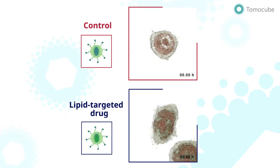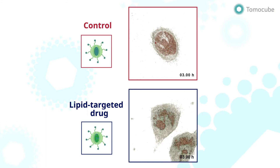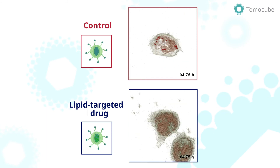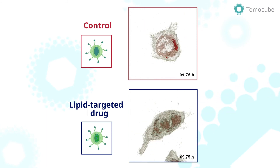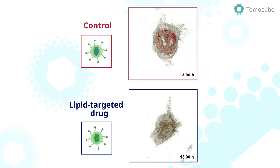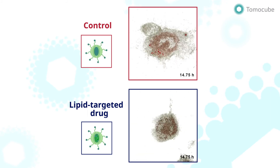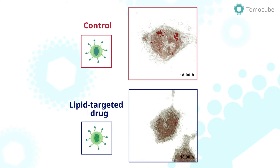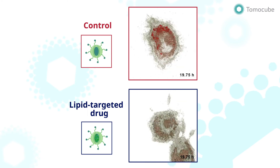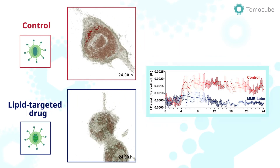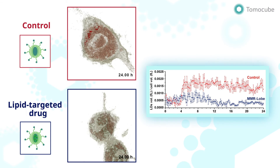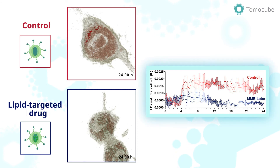Finally, the team identified changes to the macrophages after treatment with macrophage-specific lipid targeting drugs. The foam cell formation process after drug treatment was recorded for 24 hours by HT time-lapse imaging. The quantitative analysis of lipid droplets in the cells showed that the drug-treated macrophages did not form lipid droplets compared to the control group.